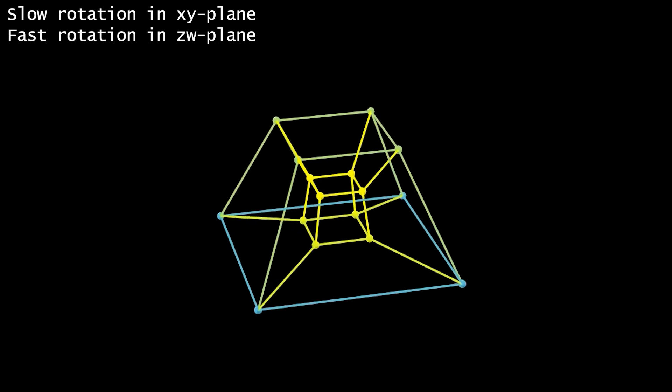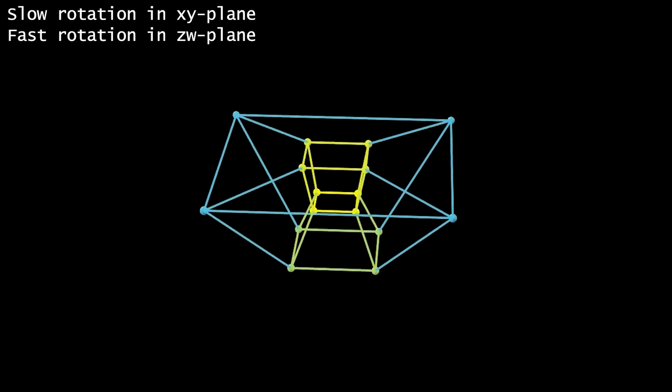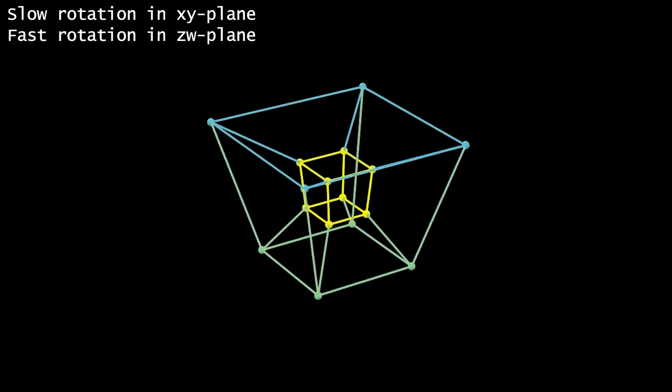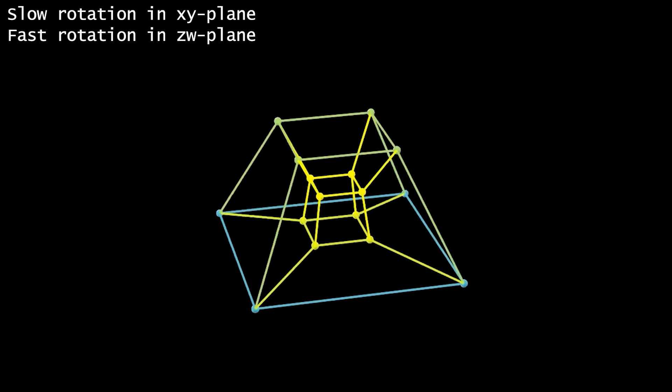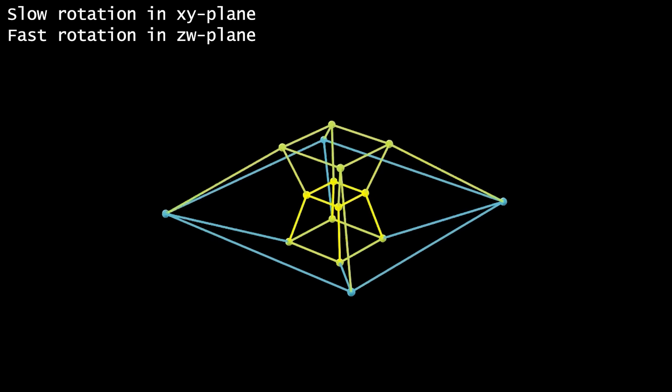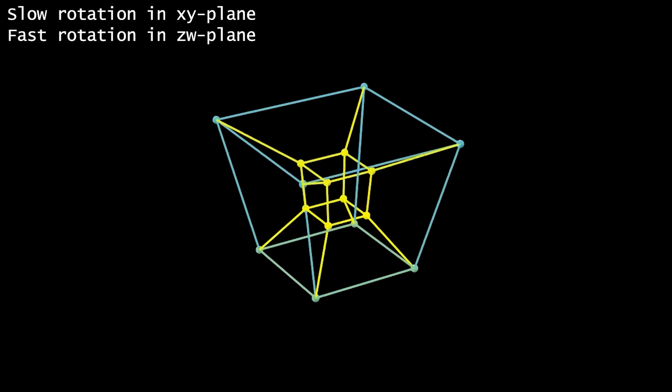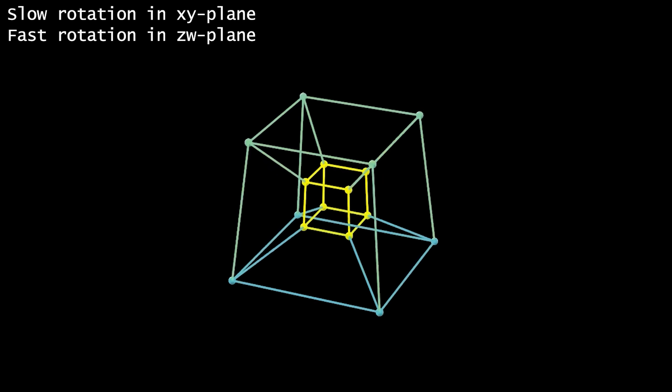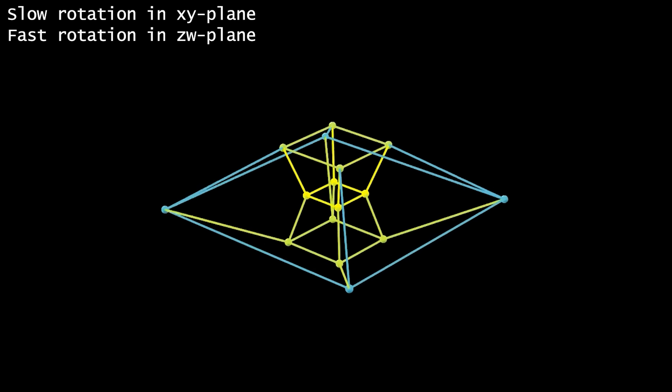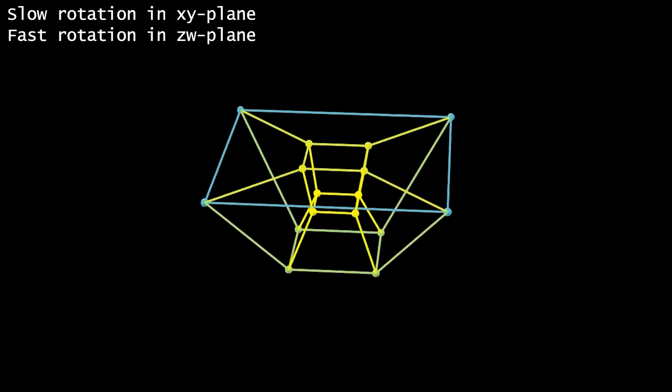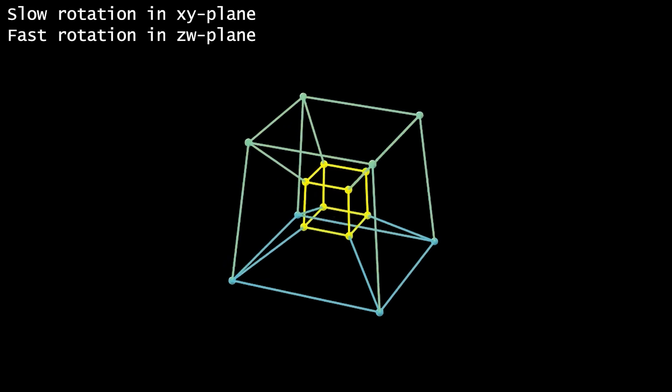What really sets the fourth dimension apart is that I can do both at the same time. This is me rotating in the x, y plane slowly and rotating in the z, w plane relatively quickly. In four dimensions, I can do two different rotations at the same time. And because the x, y and z, w planes don't have anything in common but for the origin, I can do these two rotations in these two planes simultaneously without each infecting the other.